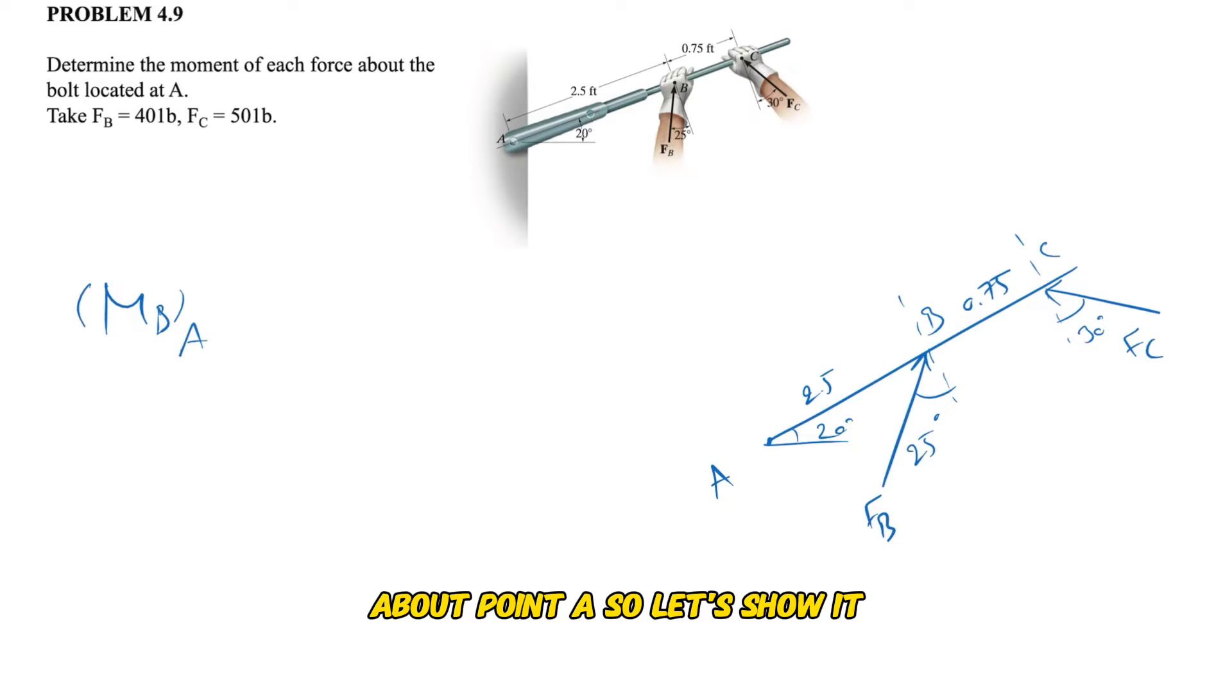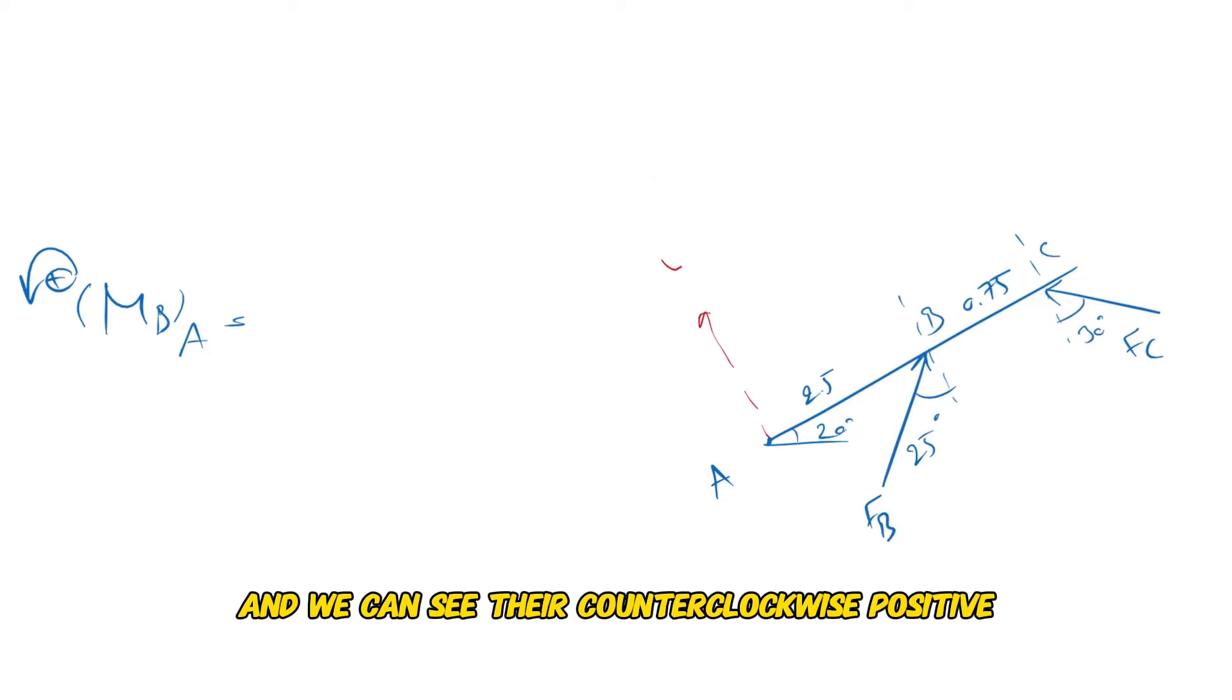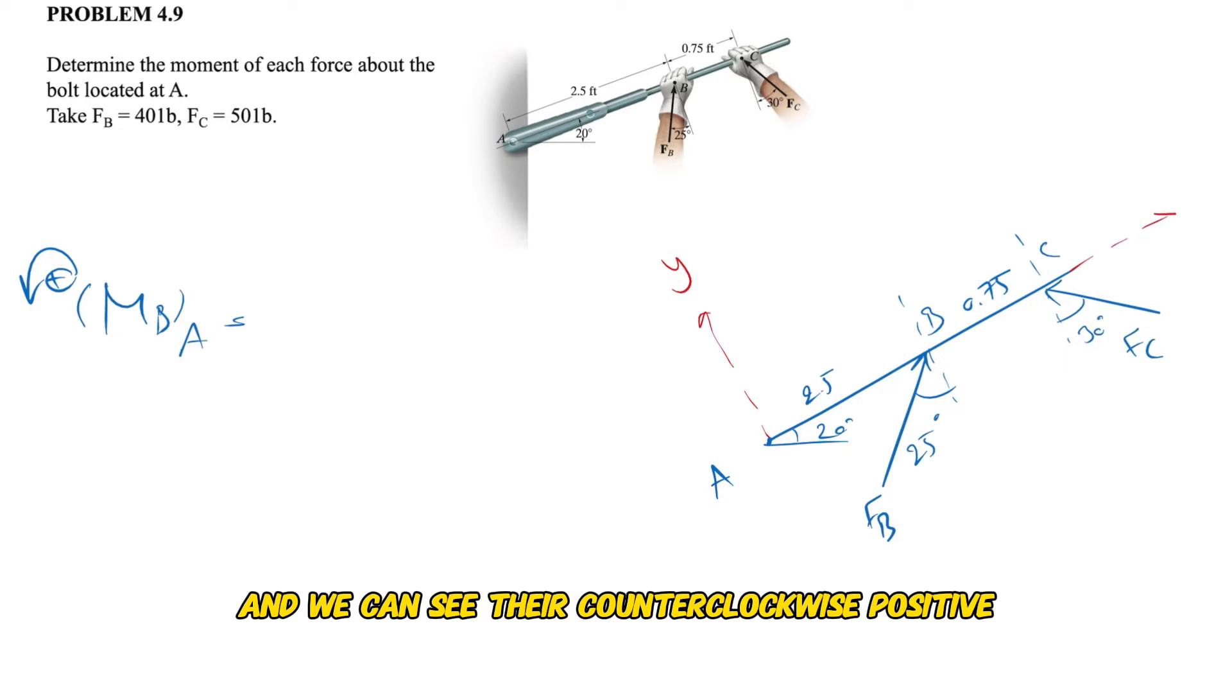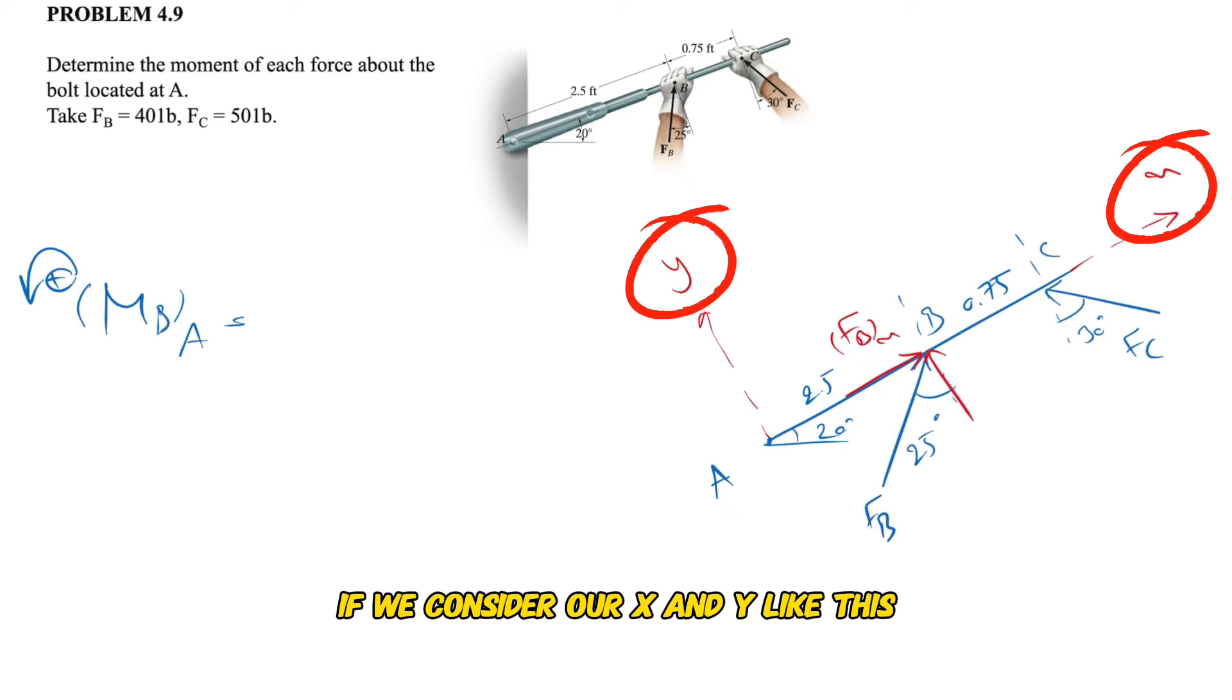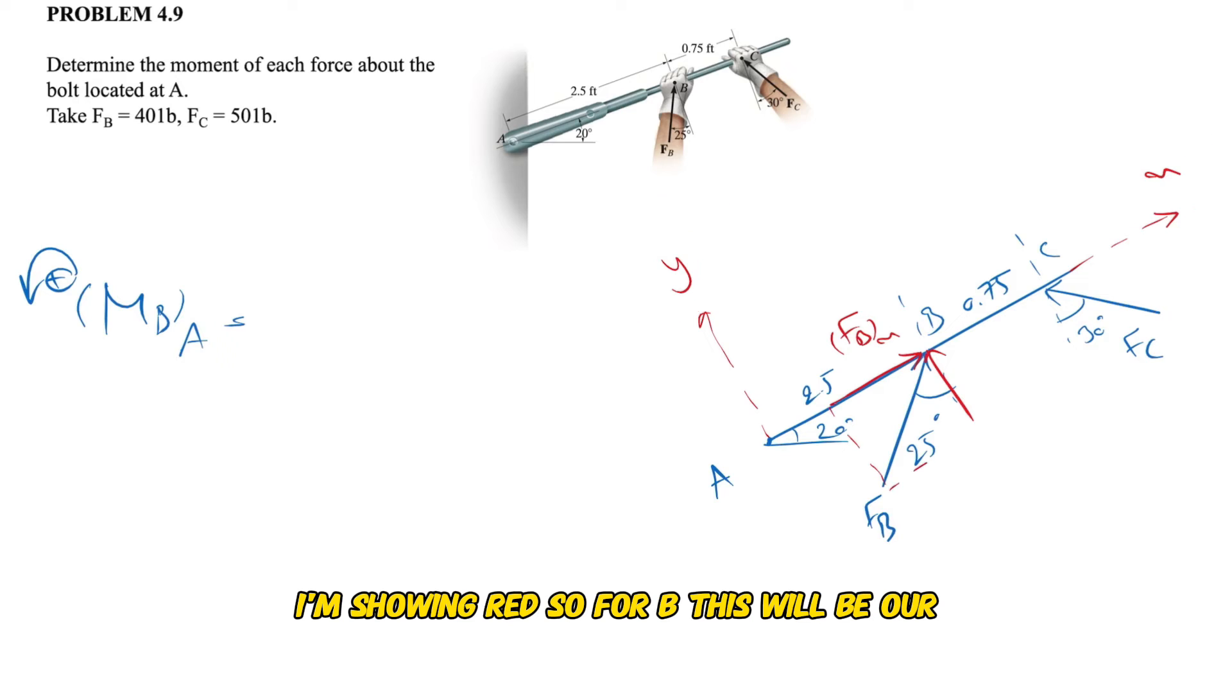So let's show the moment of B about point A. We can see that counterclockwise is positive. Let's see what we have for A and B. If we consider our X and Y like this I'm showing in red, so for B this will be our Fbx and this will be our Fby.